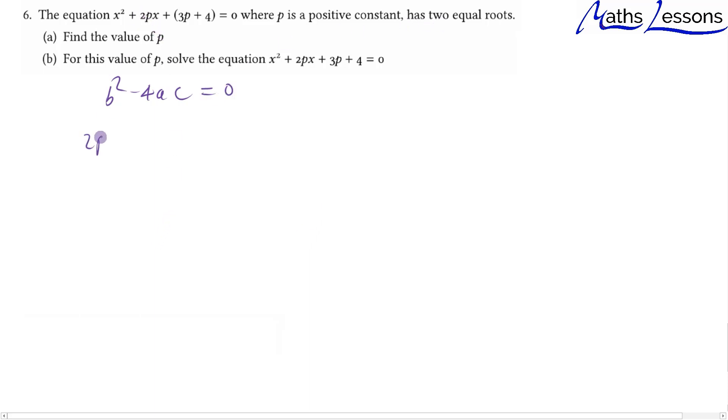So we know that (2p)² minus 4 times a, which is 1, times (3p + 4) will equal 0.